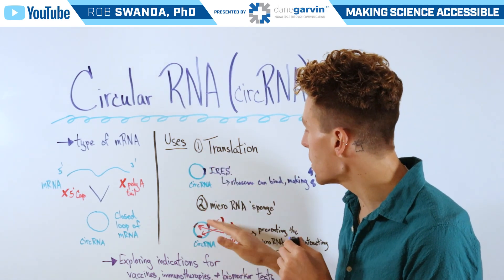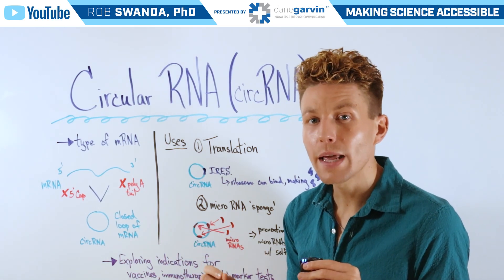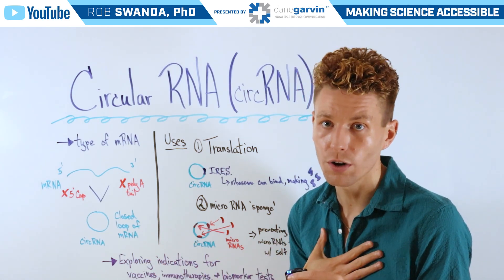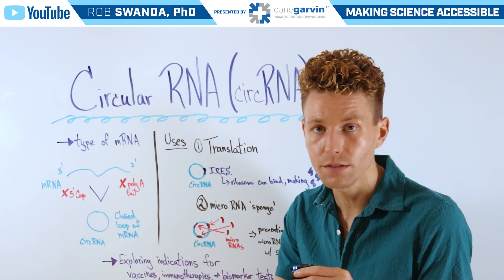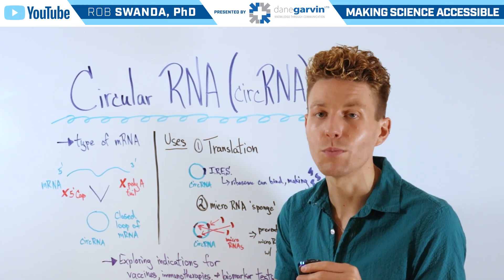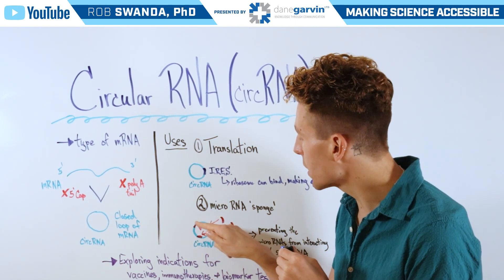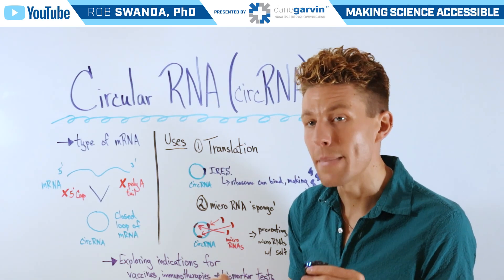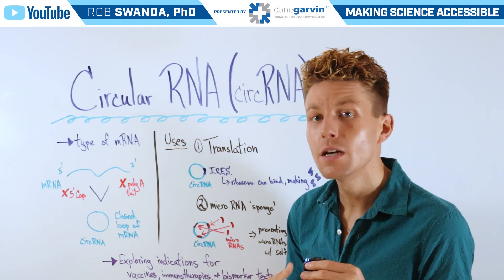Additionally, circRNA can be used for microRNA sponging, or attracting microRNAs. MicroRNAs can be produced by a variety of different diseases, and they are complementary to our self-RNAs when we're trying to produce a protein that might be helpful in combating that disease. Because those microRNAs are complementary, they bind to our self-RNAs and we can't produce that protein. But if circRNAs are introduced, they can have complementary sequences within the RNA itself, therefore serving almost like a magnet to those microRNAs, pulling them to the circRNA and allowing our self-proteins to be made.